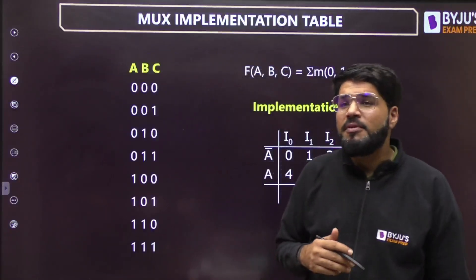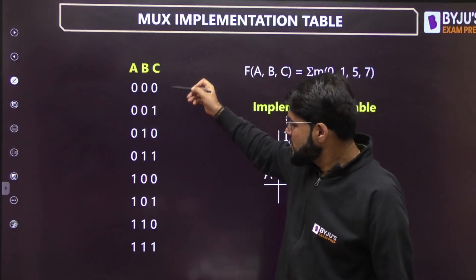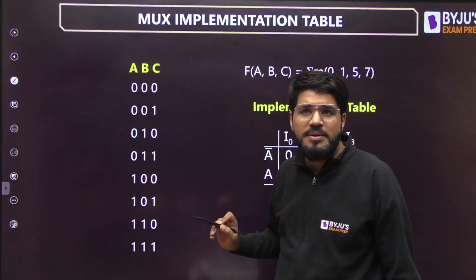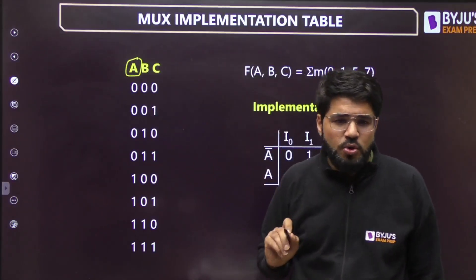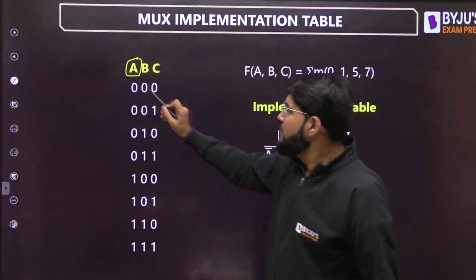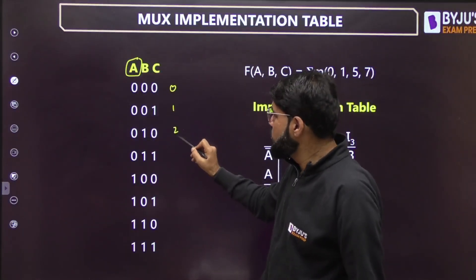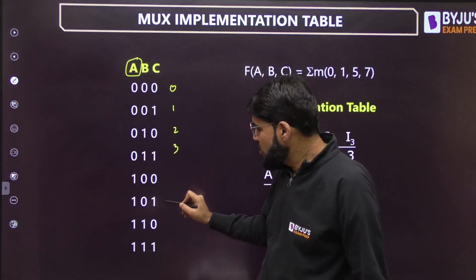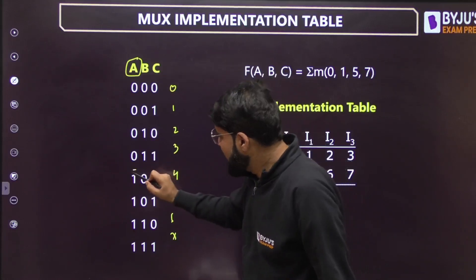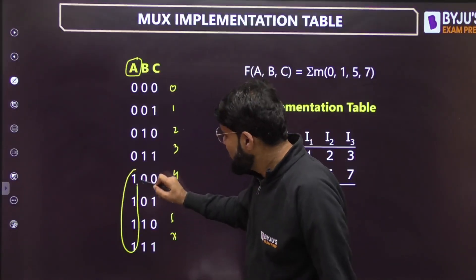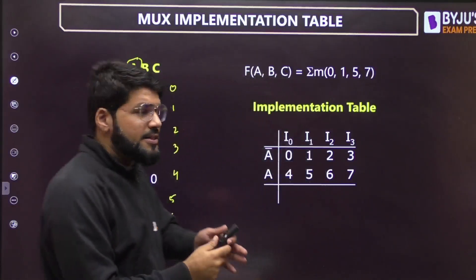Before I show you the implementation table, how to form it must be understood. These are the 8 combinations of 3 bits A, B, C. A has to go at the input line. Now where is A=0? A is equal to 0 at the first 4 minterms — that is 0, 1, 2, 3 in decimal. At combinations 4, 5, 6, 7, A is high, and at the first 4 combinations A is low.